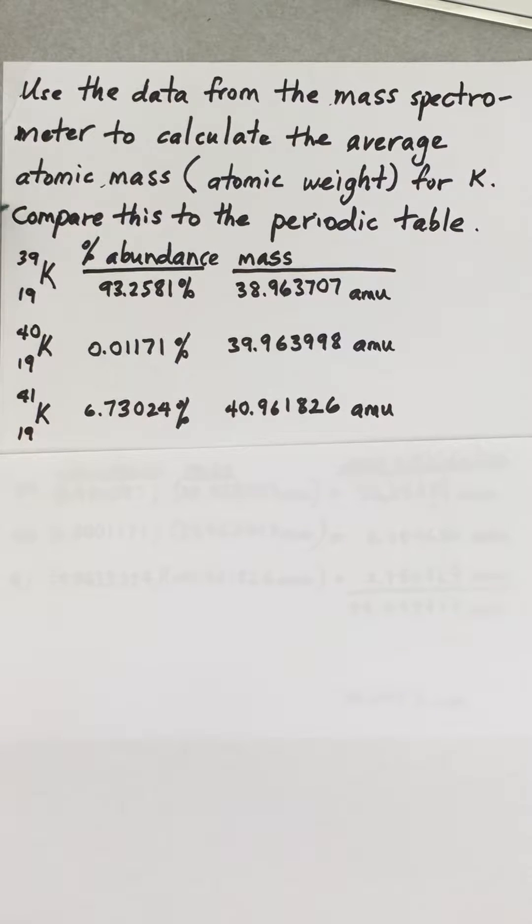Potassium 39, potassium 40, and potassium 41. Here is the percent abundance. This would be given in the mass spectrometer data as the area under the curve. So most of the area under the curve, in other words 93% of it, is going to be coming from potassium 39. So you have a small amount of potassium 40 and some potassium 41, but the major isotope of potassium is potassium 39.